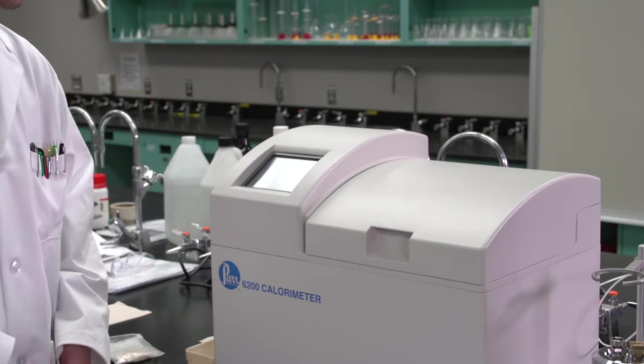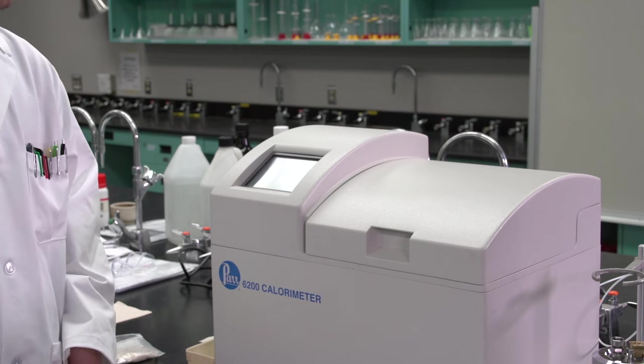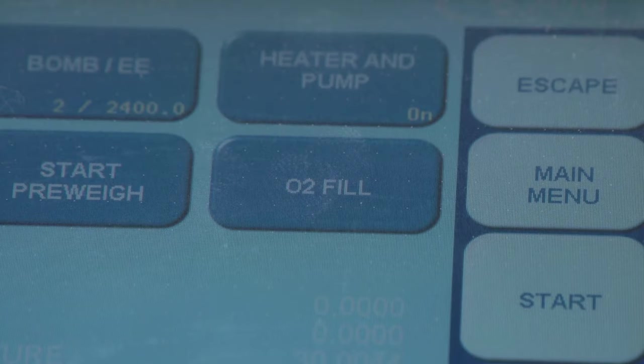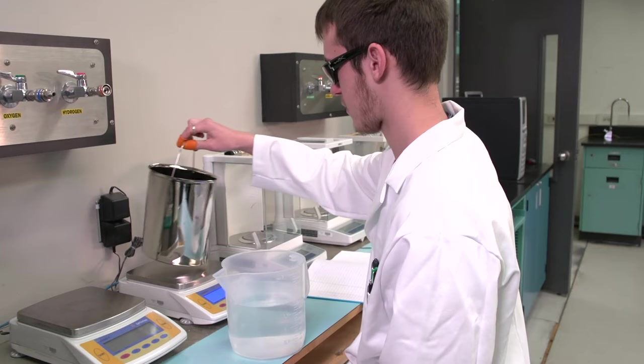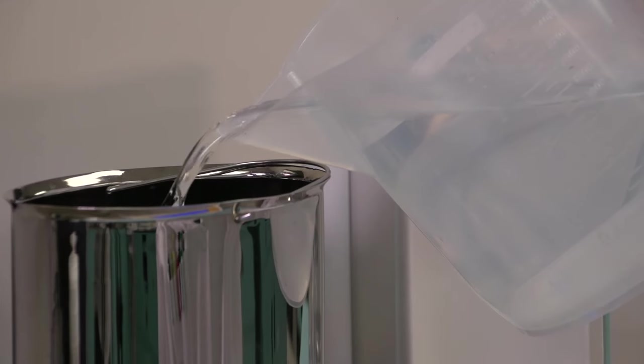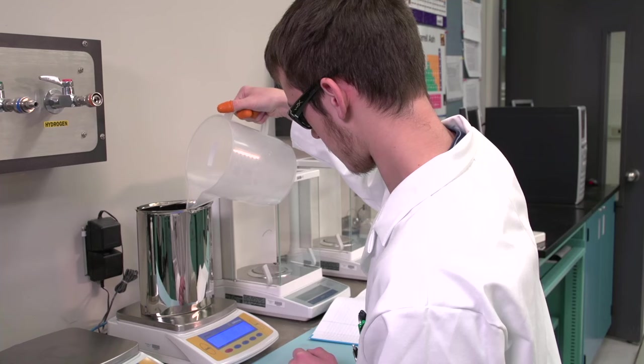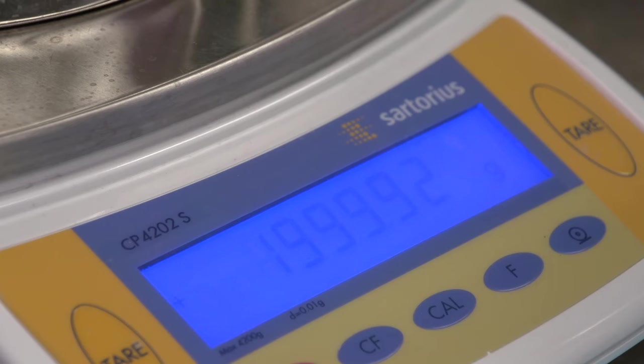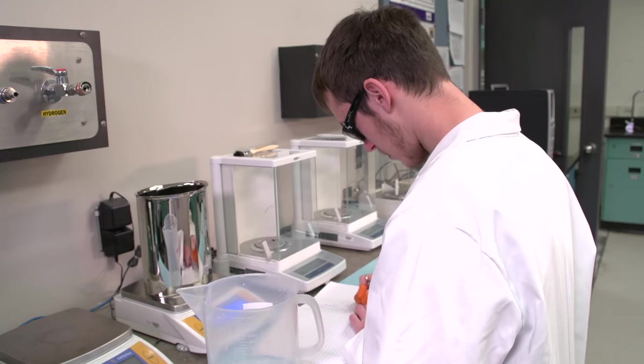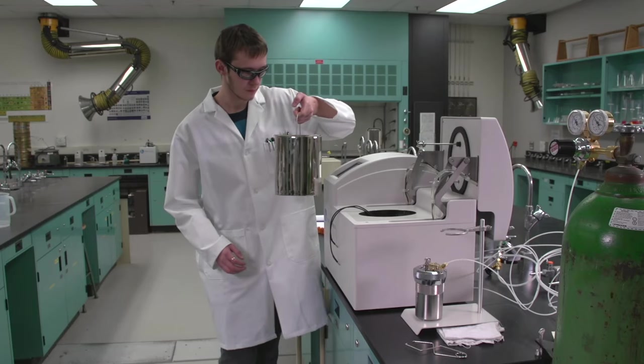If necessary, push the O2 fill button a second time to stop the filling process. Fill the calorimeter bucket with 2000 plus or minus 0.5 grams of deionized water. Record the mass of the water. Place the filled bucket into the calorimeter.